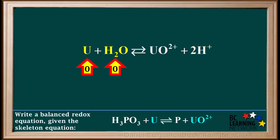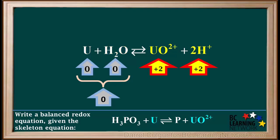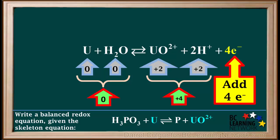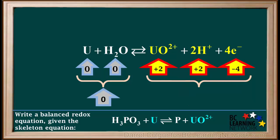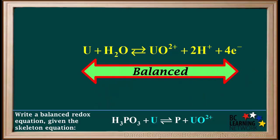In the next step, we balance ionic charge. Looking on the left side, we see both U and H2O have zero charges, so the total charge on the left side is zero. Looking on the right side, the UO2+ ion and the two H+ ions both have a total charge of positive 2, so the total charge on the right is positive 2 plus positive 2, which adds up to positive 4. To balance charge, we add four electrons to the right side. The total charge on the right side is now positive 2 plus positive 2 plus negative 4, which adds up to zero — the same as the total charge on the left side. So this half-reaction is now balanced.